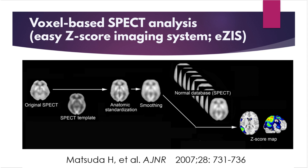Statistical image analysis is useful in such difficult-to-read cases. Individual brain images are fit to a standard brain template by linear and non-linear transformations — this is called anatomic standardization. Further smoothing is performed and statistically compared voxel by voxel with the mean and standard deviation images of a large number of similarly processed normal database images. The resulting Z-scores are color mapped and superimposed on the MRI of a standard brain, making it possible to automatically detect areas of abnormal perfusion or metabolism.